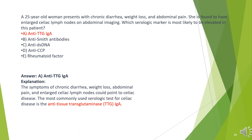The answer is A. Anti-tTG IgA. The symptoms of chronic diarrhea, weight loss, abdominal pain, and enlarged celiac lymph nodes could point to celiac disease. The most commonly used serologic test for celiac disease is the anti-tissue transglutaminase IgA.